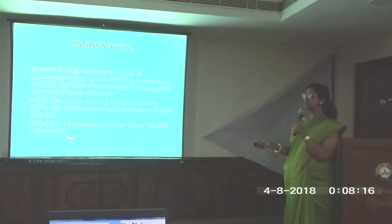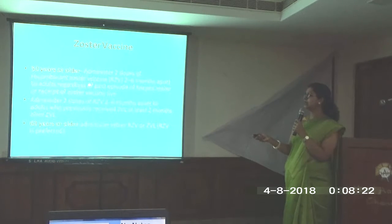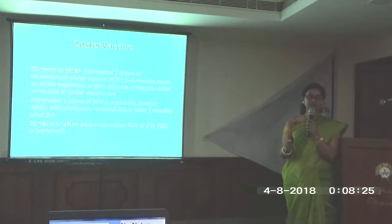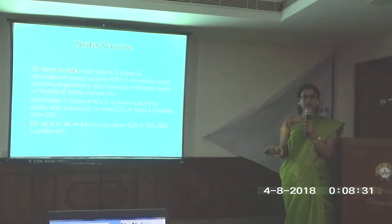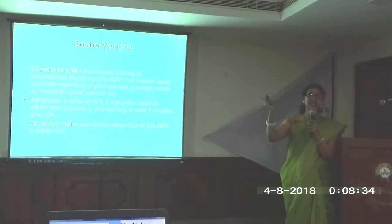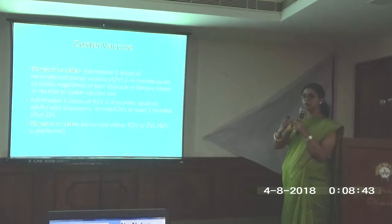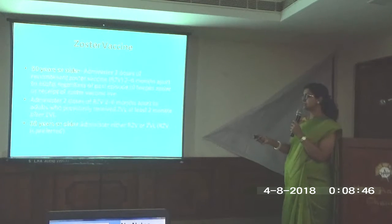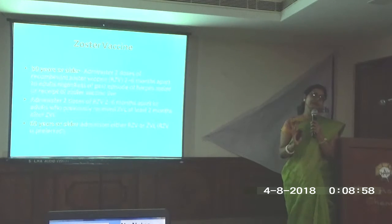The newer change for the zoster vaccine: for adults 50 years or older, the recommended one is now the recombinant zoster vaccine. Two doses should be administered two to six months apart, regardless of past history of herpes zoster or prior live zoster vaccine. For adults 60 years or older, either the recombinant zoster vaccine or a live zoster vaccine can be administered.